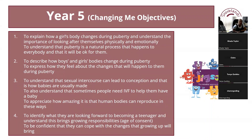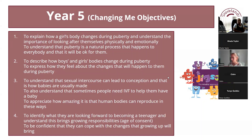Year five covers the 'Changing Me' unit of work for the next term. The objectives are: to explain how a girl's body changes during puberty and understand the importance of looking after themselves physically and emotionally; to understand that puberty is a natural process that happens to everybody; to describe how boys' and girls' bodies change during puberty; to understand that sexual intercourse can lead to conception and that is how babies are usually made; to understand that sometimes people need IVF to help them have a baby; and to identify what they are looking forward to in becoming a teenager, understanding the age of consent and growing responsibilities.